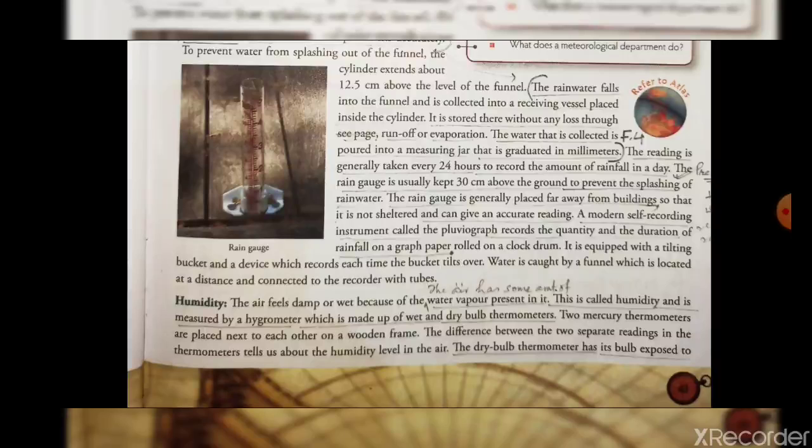The dry bulb thermometer has a bulb exposed to the air and it records the temperature of the atmosphere, while the wet bulb thermometer has its bulb covered with a damp cloth. The difference between the two separate readings in the thermometers tells us about the humidity level of the air.